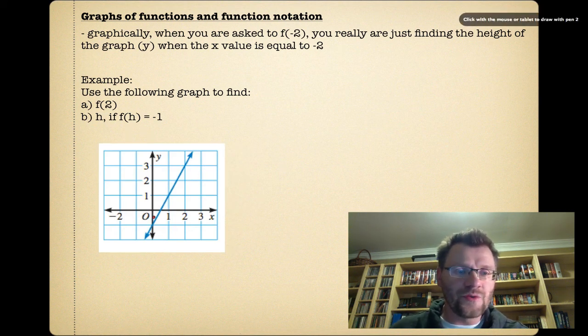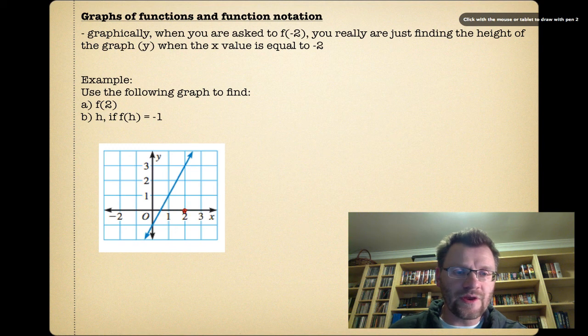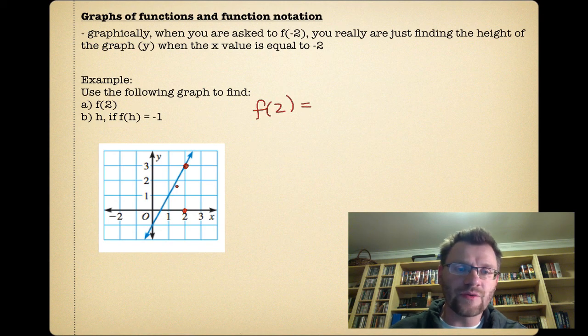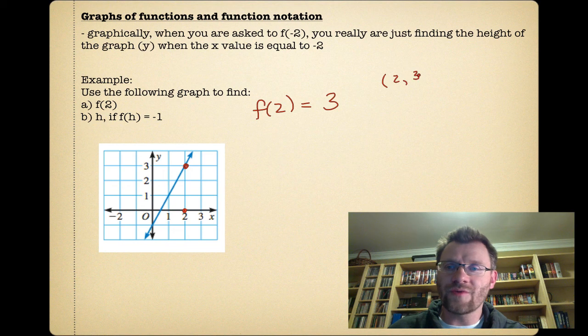Here's our graph. If we're finding f(2), we just go over to the 2 spot right here, and we go up to where our graph is. And so that means that f(2) is equal to a height of 3. So that point is just (2, 3). And so f(2), the x value 2, is the x value - sorry, f(2) is the y value, which is 3.